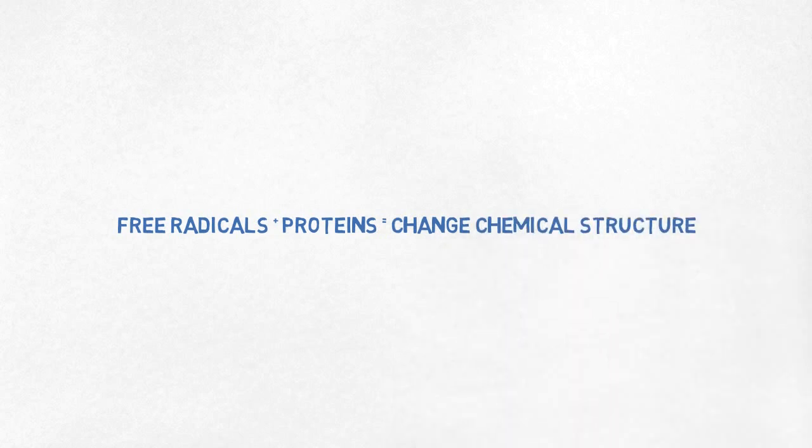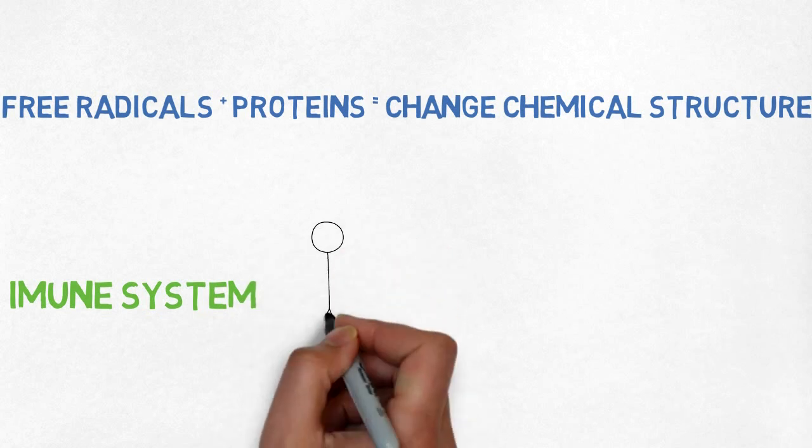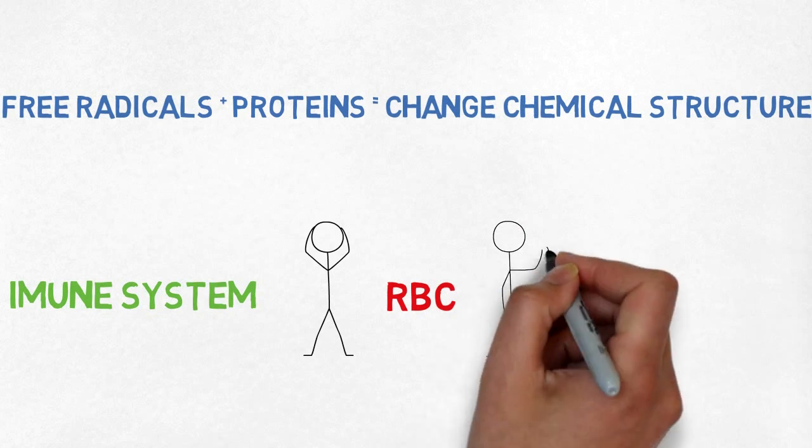What happens if the free radicals increase? These harmful free radicals bind with proteins in red blood cells and tend to change their chemical structure. Then the immune system cannot recognize the red blood cells and starts destroying them.